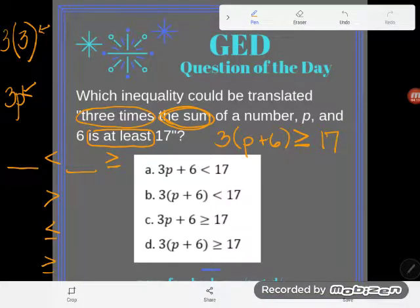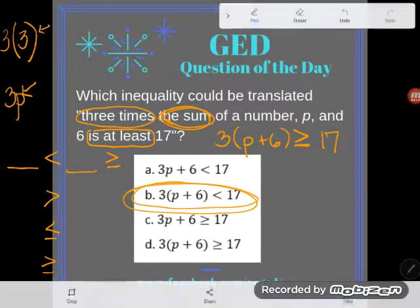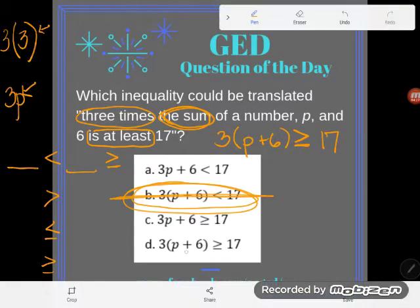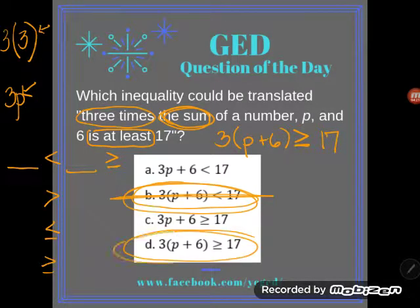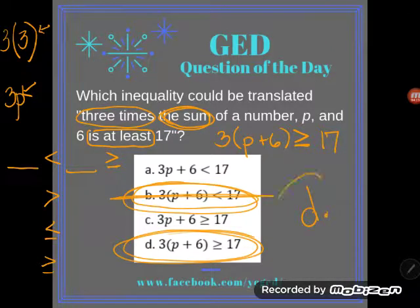Okay. So which one of these problems matches mine? Three times the quantity P plus six or three times the sum of P and six. Oh, not that one. Wrong inequality symbol. There we go. Is greater than or equal to 17. So correct answer here is D. D. Great.